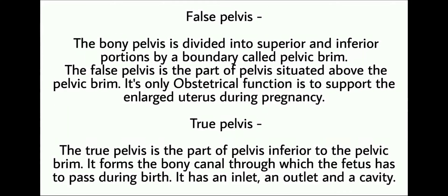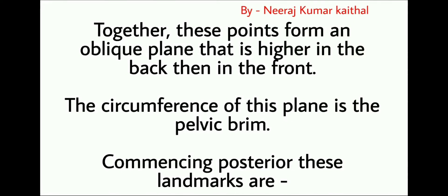The true pelvis is the part of the pelvis inferior to the pelvic brim. It forms the bony canal through which the fetus has to pass during birth. It has an inlet, an outlet, and a cavity. Together these landmark points form an oblique plane that is higher in the back than in the front. The circumference of this plane is the pelvic brim.